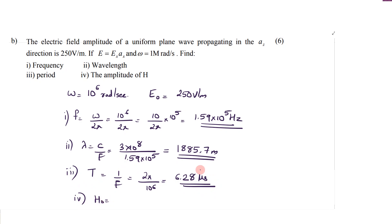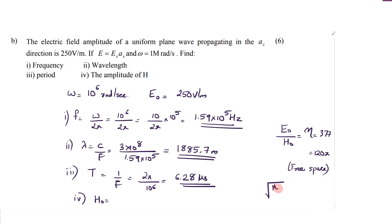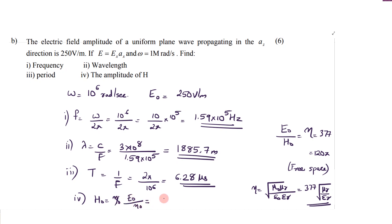Then calculate the amplitude of H, that is H0. We know that E0 divided by H0 equals eta. For free space it is 377 ohm or 120 pi. For another medium, eta equals square root of mu0 mu r over epsilon0 epsilon r, which simplifies to 377 times square root of mu r over epsilon r. Here we are assuming free space, so H0 equals E0 divided by eta0 — that is 250 divided by 120 pi or 250 divided by 377 — giving 0.6631.